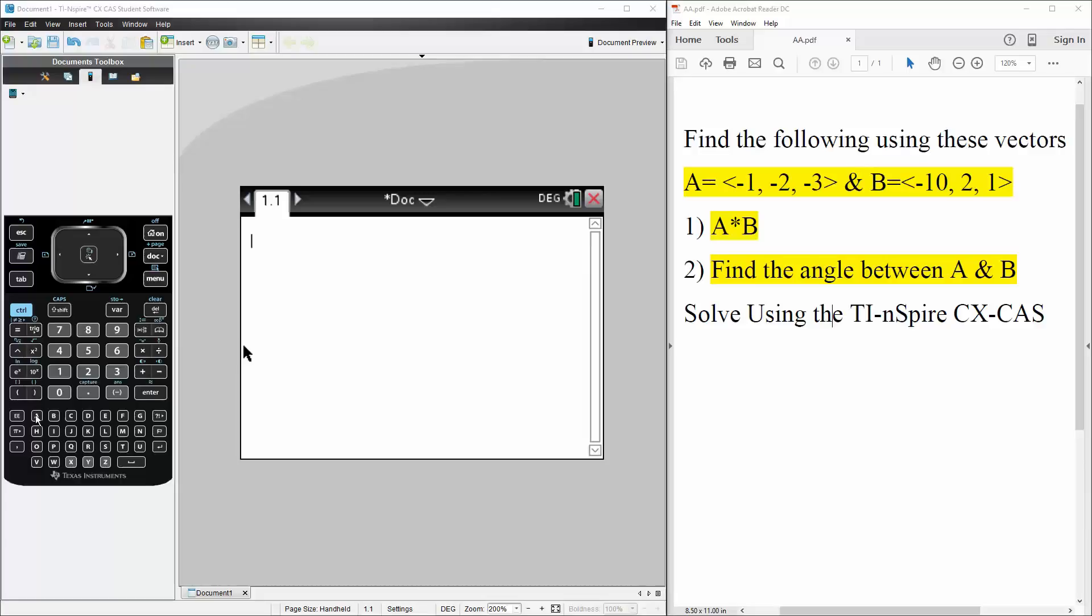So first we need to define A. A is defined as - we use square brackets to represent vectors - so negative 1, comma, negative 2, comma, negative 3, hit enter.